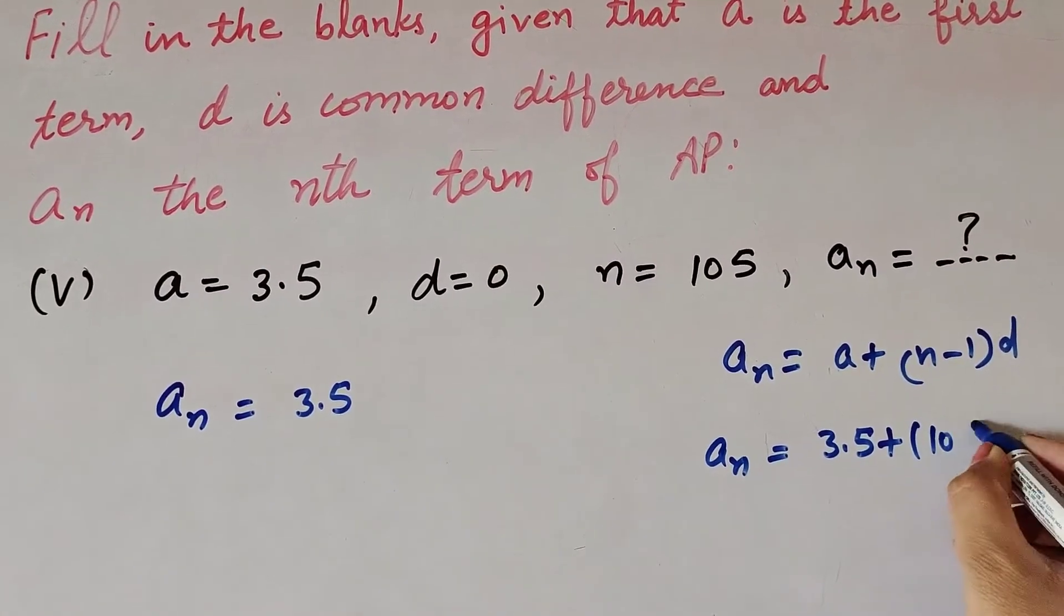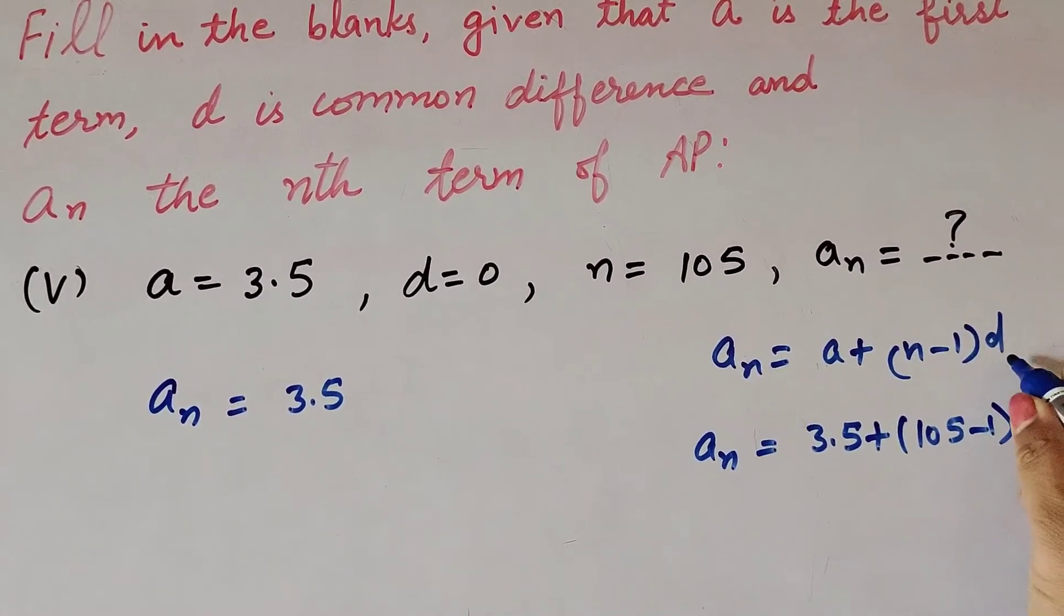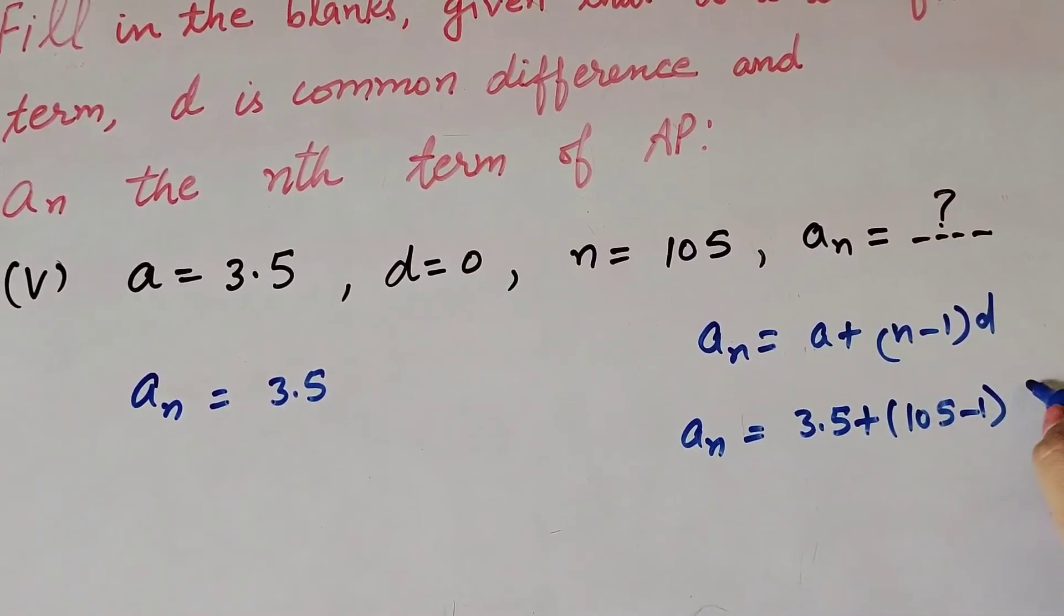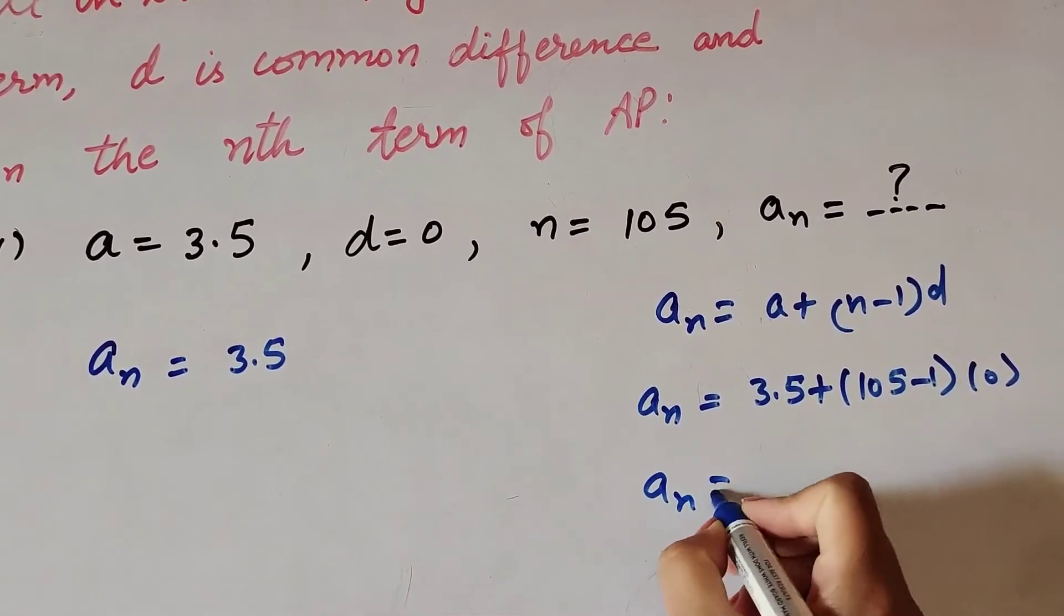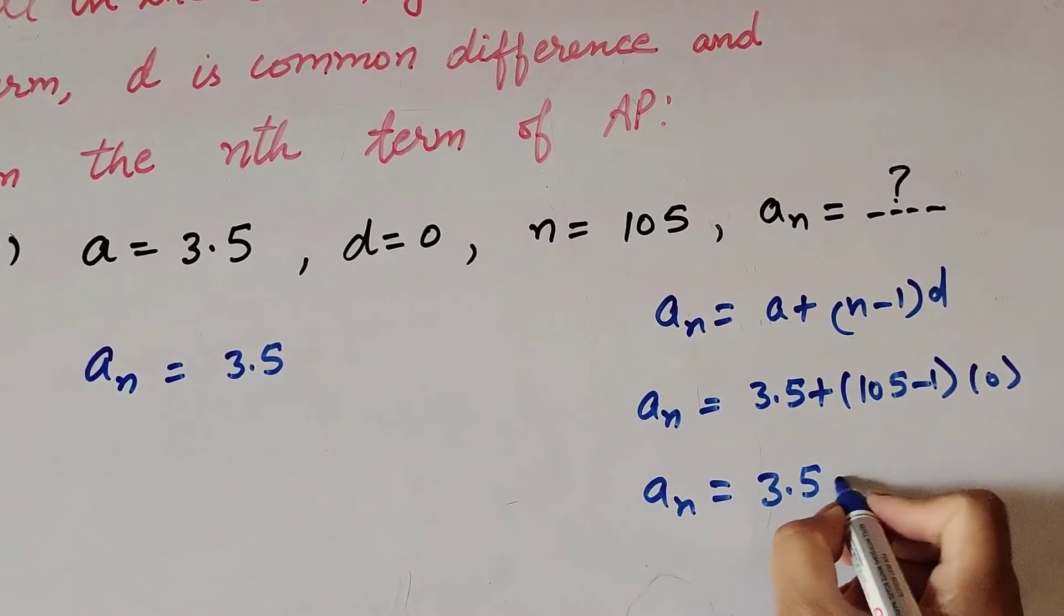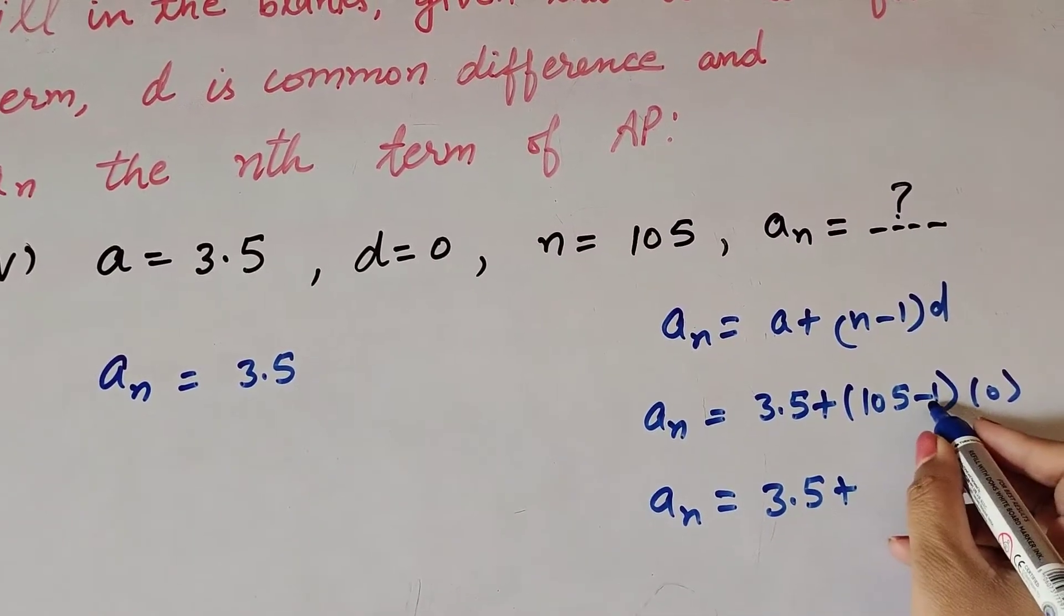So an equals 3.5 plus (105 minus 1), which is equal to 104, times 0.